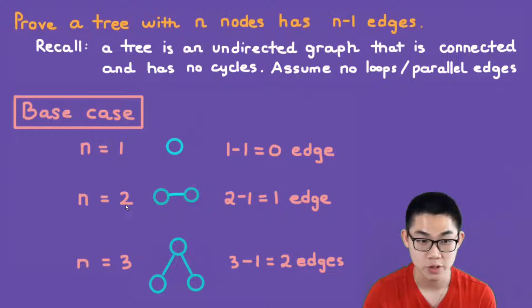Now let's try n is equal to 2. We draw the graph. We see two vertices with one edge. So 2 nodes minus 1 is 1, and that's true. The formula is true for n is equal to 2. And when n is equal to 3, we also see that there are three vertices and there are two edges. So the statement is true as well.